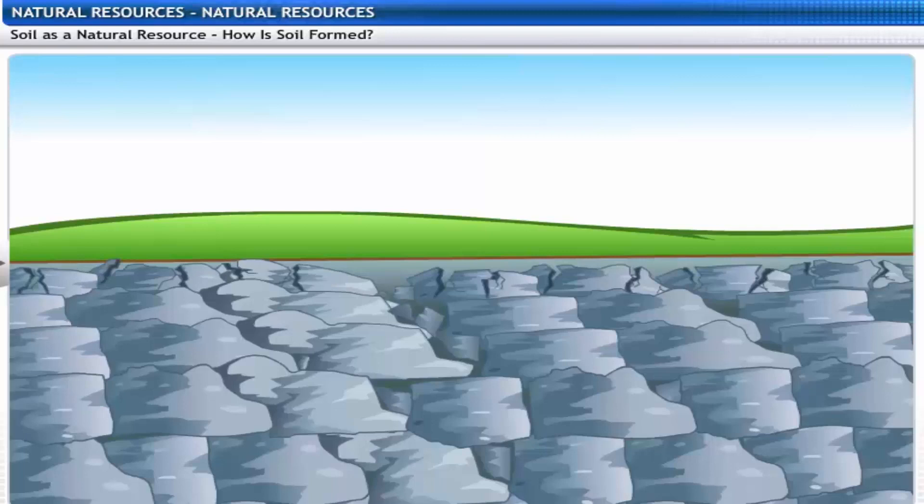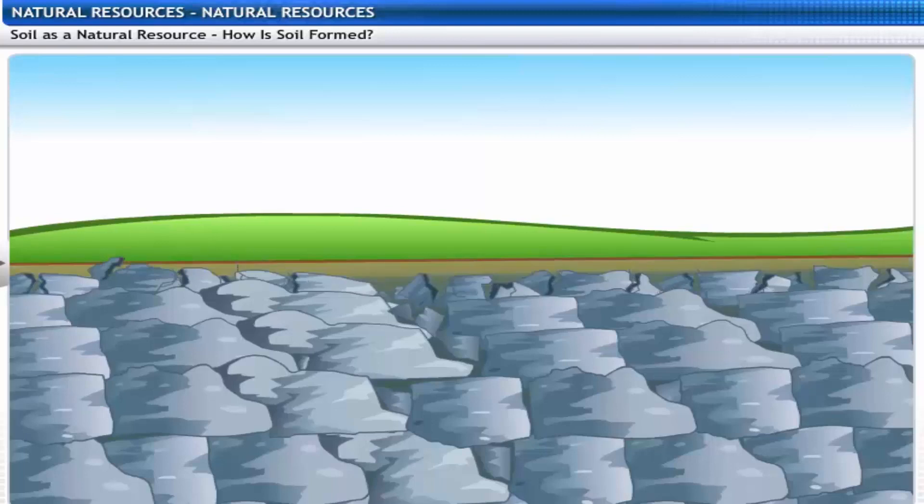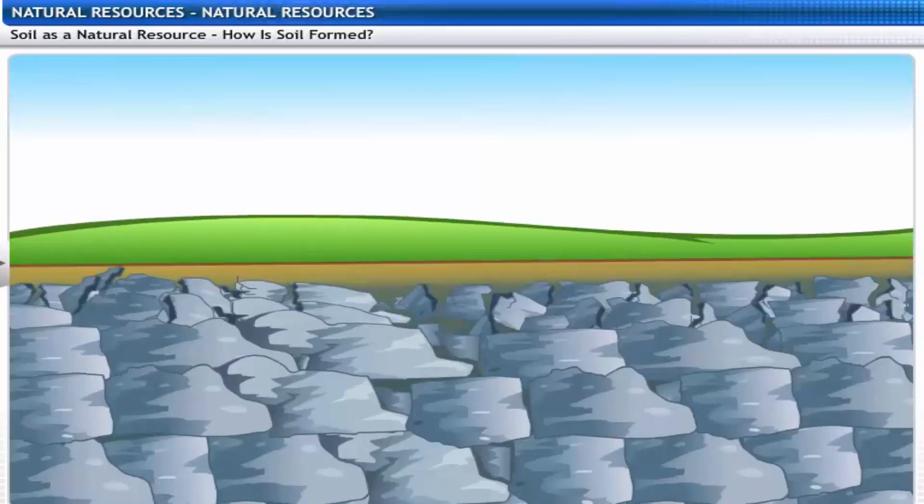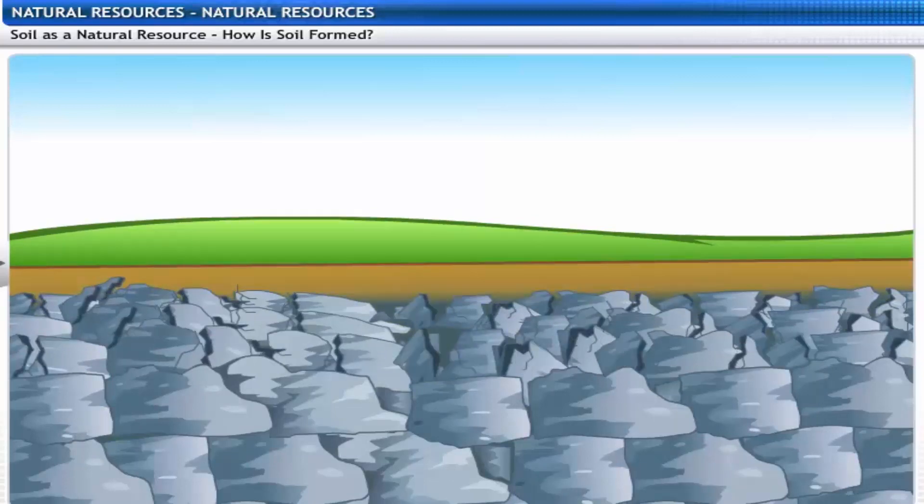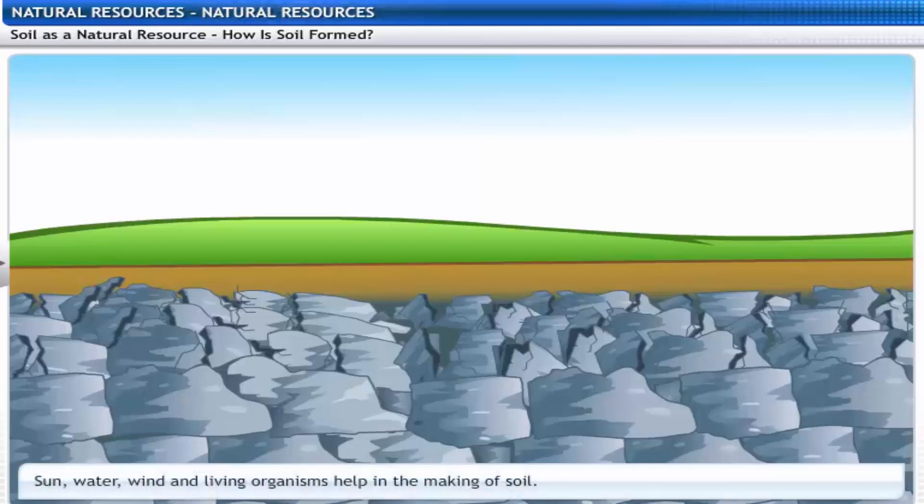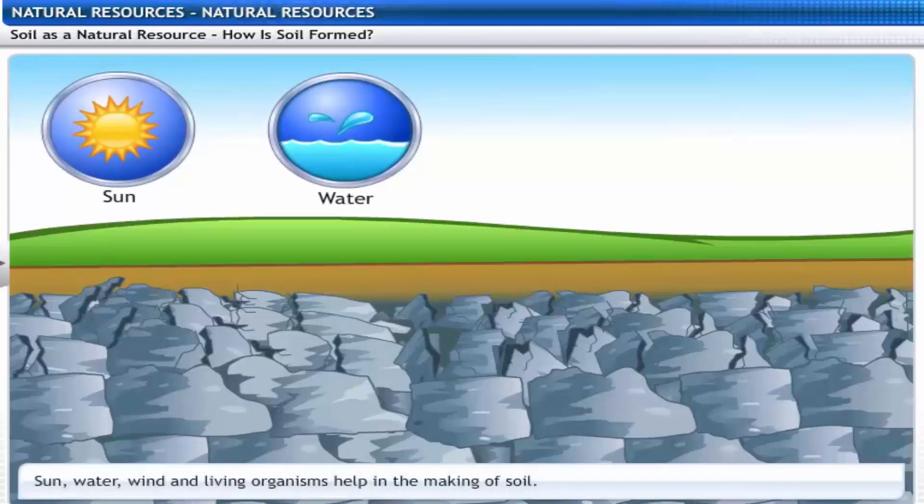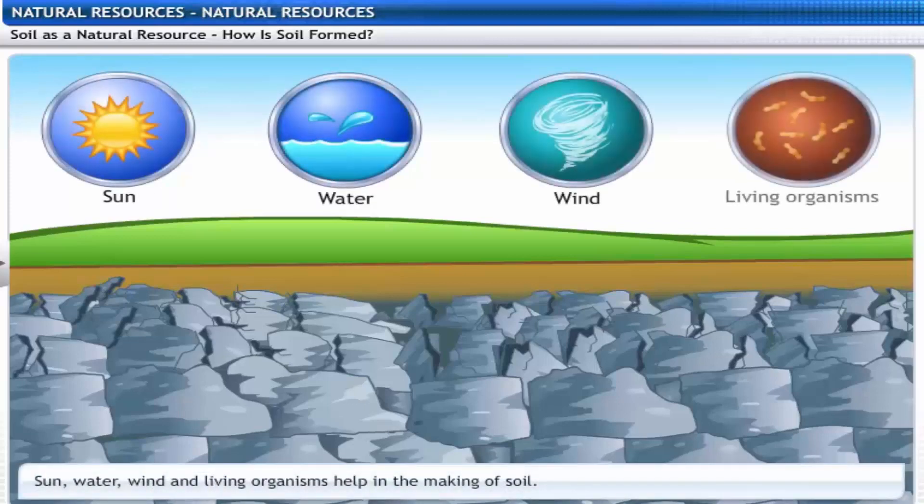Over millions of years, rocks on the earth's crust have been broken down by physical, chemical and biological processes to make soil. Sun, water, wind and living organisms are the factors that help in the making of soil.